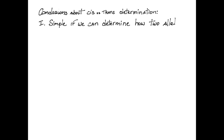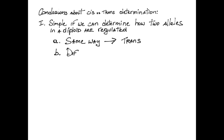Here are the conclusions about cis versus trans determination. It is simple if we can determine how two alleles in a diploid are regulated. If they are regulated in the same way, it is trans regulation. If it is different ways, it is cis.